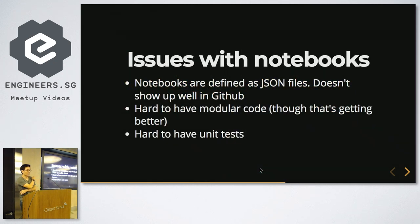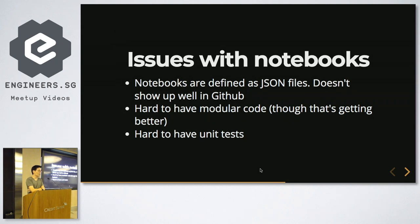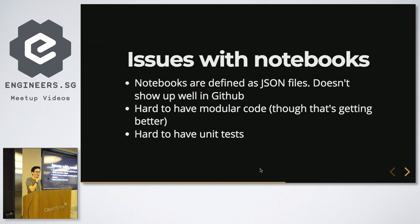Some issues we found with notebooks: behind the nice interface, these notebooks are defined as a JSON file. The problem with them is that they don't show up very well in GitHub. If you have an existing notebook checked into GitHub and you change a few cells, it's hard to see with the Git diff what changed in a certain commit. It's hard to have modular code, though that is getting better in the beta called Jupyter Labs, which makes it easier to call external scripts from your notebook. And you're not very incentivized to have unit tests.